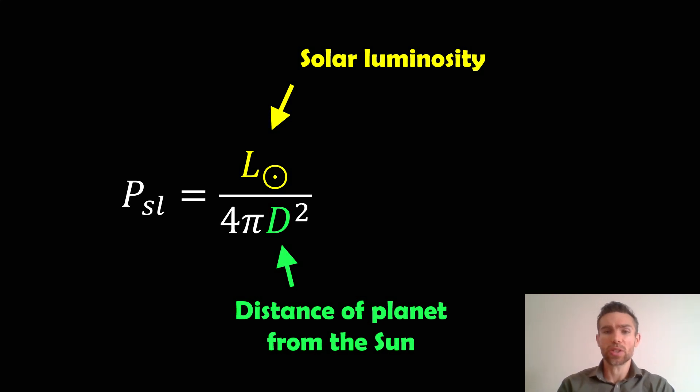So here we've got the solar luminosity, that's the power emitted by the Sun, and that's divided by 4π times D squared, where D is the distance of the planet from the Sun. We know the average distance of Earth from the Sun is about 1 AU, but we could do this for any other planet.